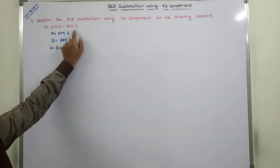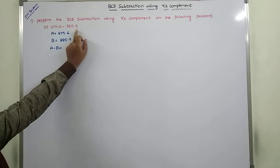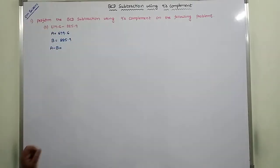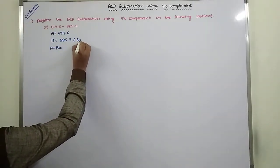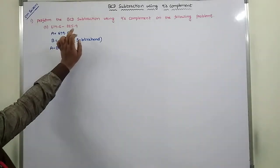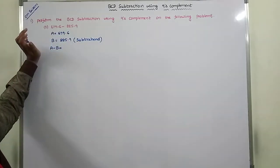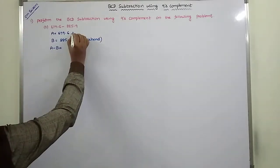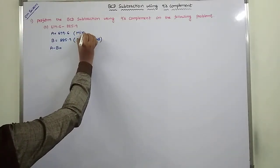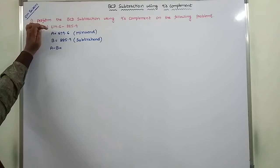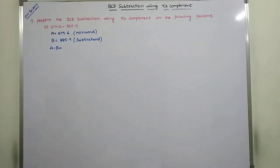Here, which number is subtracted, that number is called the suprahan. Here, 885.9 is subtracted from 679.6, so 885.9 is called the suprahan. The number from which we subtract the suprahan is called the minu. Here, 679.6 is the minu because 885.9 is subtracted from 679.6.